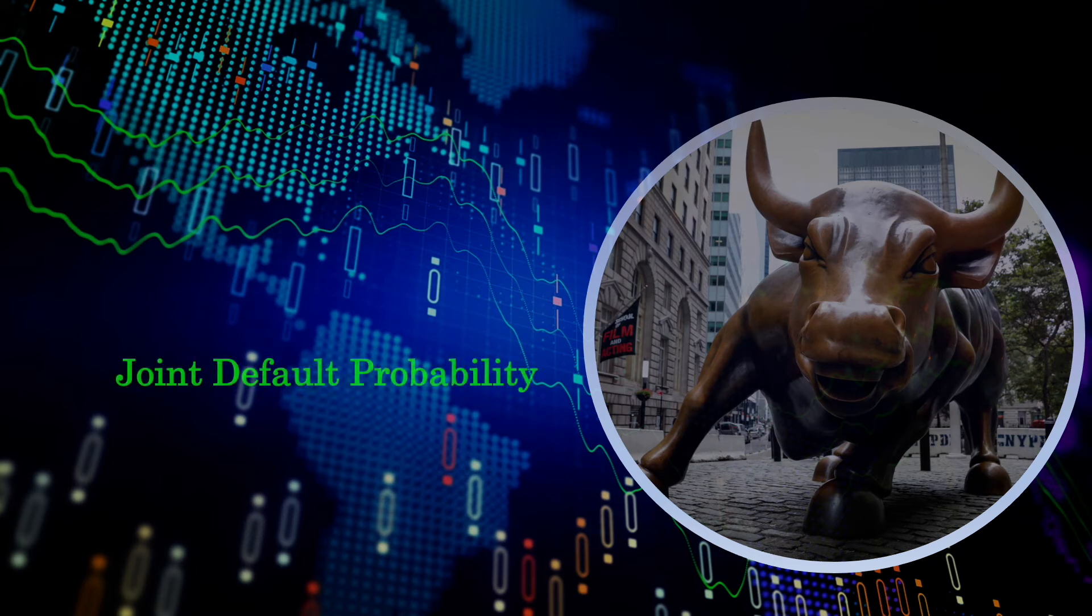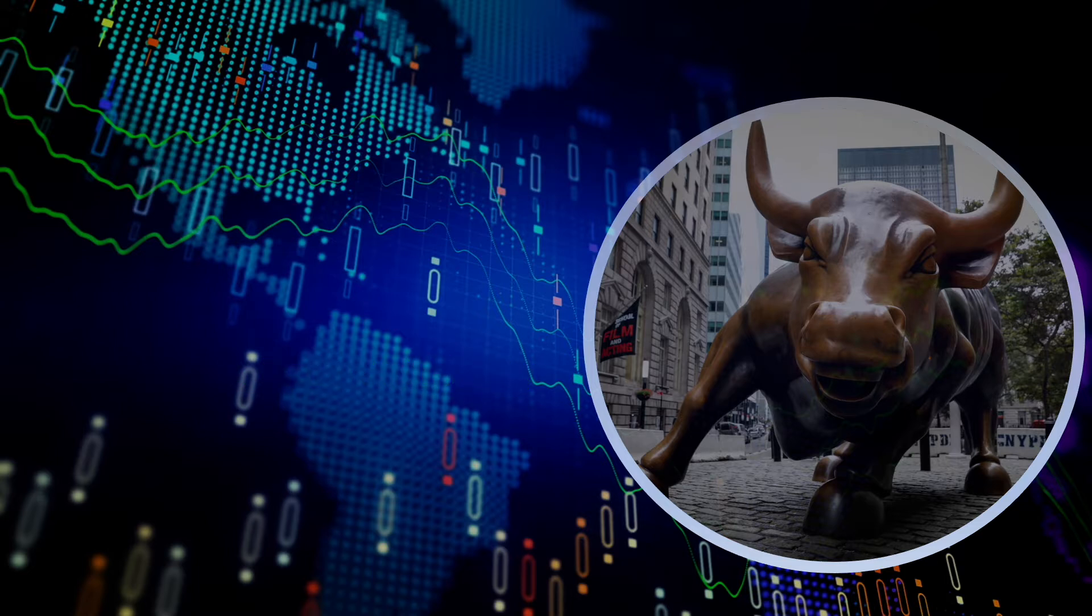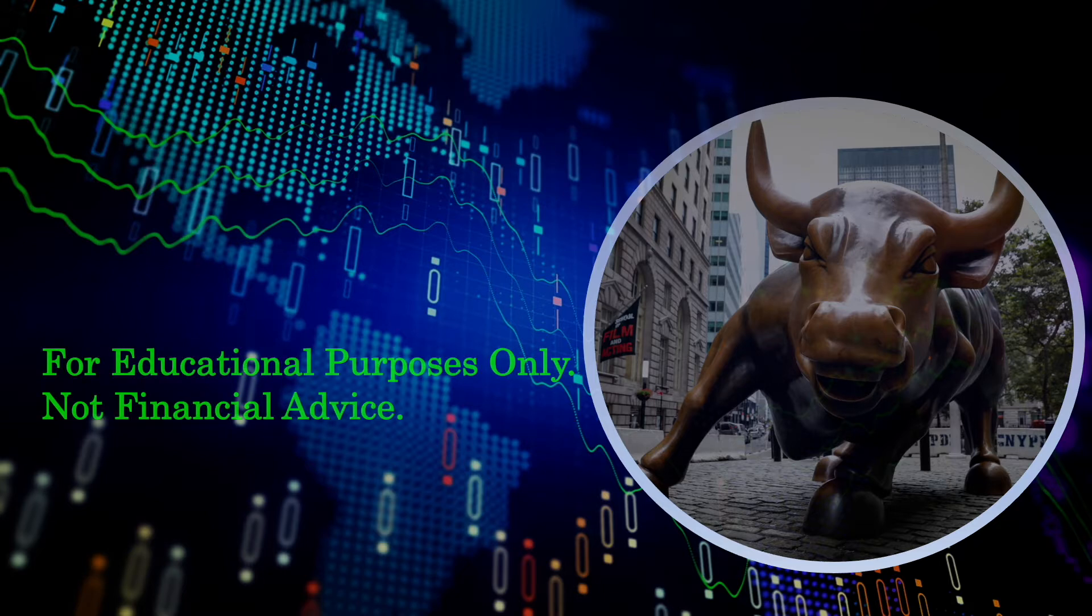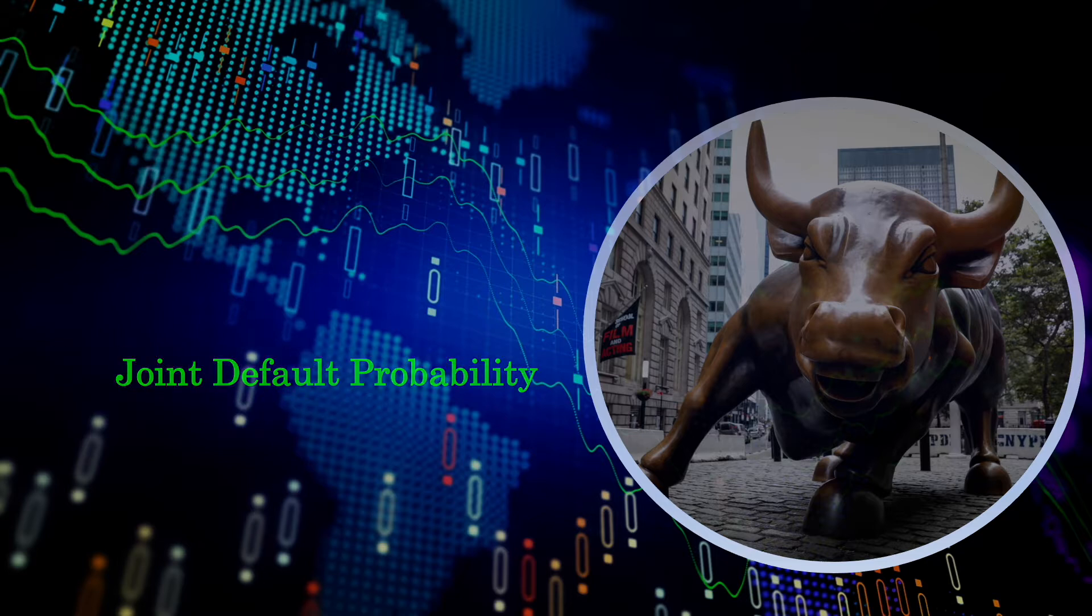Joint default probability is a basic and important problem to understand. Having a solid understanding of the problem requires knowledge of some important concepts in statistics and probability, and it helps us appreciate how to think about credit risk as well.